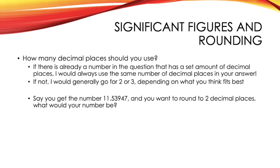Next, you've got significant figures and rounding. So, in a question, how many decimal places should you use? So, what you need to look for is if there is already a number within the question that has a set amount of decimal places. If there is, you should use the same number of decimal places as that number in the question when given your answer. So, for example, if there is a decimal place in the question that is 6.02, then in your answer, you should give it to two decimal places.